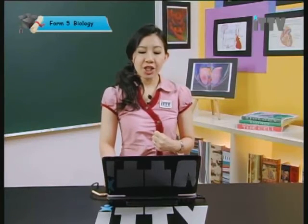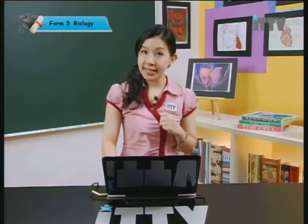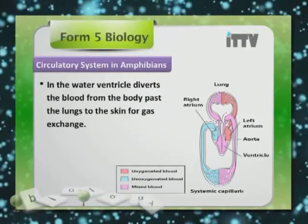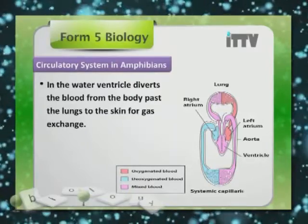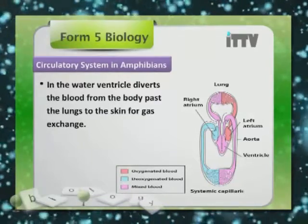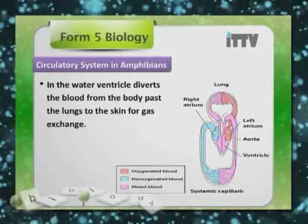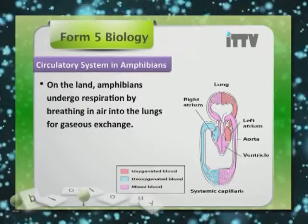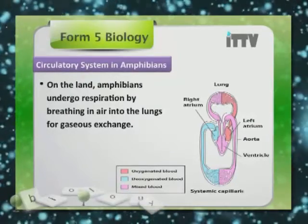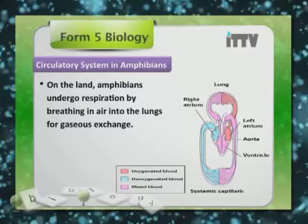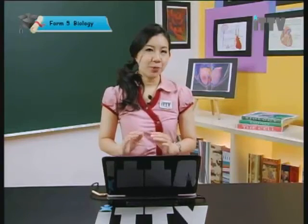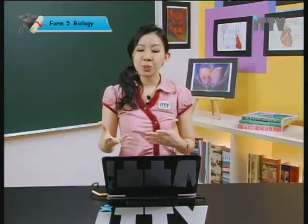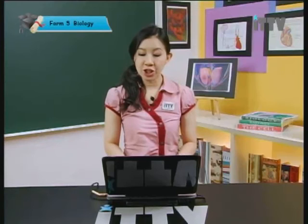Gaseous exchange can also happen via the skin when an amphibian is in the water. The ventricle diverts the blood from the body past the lungs, which then sends it to the skin for further gas exchange with the water. On land, amphibians undergo respiration by breathing in air into the lungs for gaseous exchange.